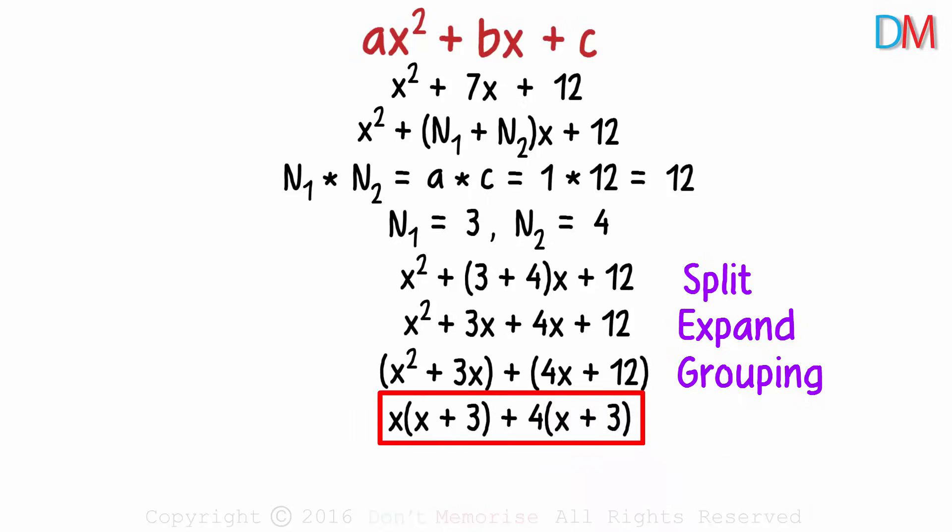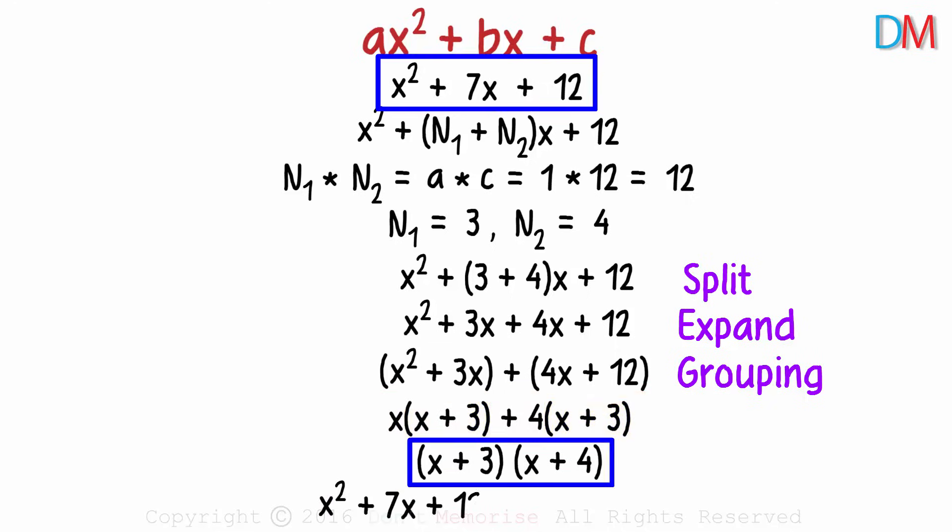Now in this polynomial, x plus 3 is common to both terms. Taking this common factor out from both terms, we get this. So this quadratic polynomial was factorized to this. The two factors of this polynomial are x plus 3 and x plus 4.